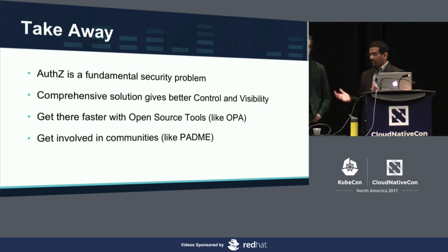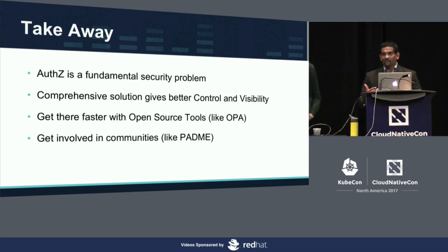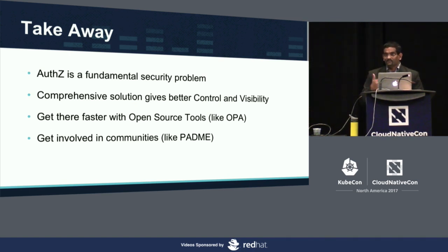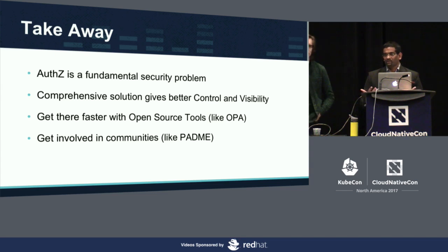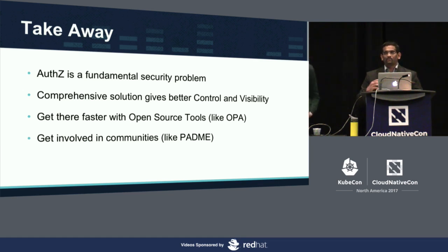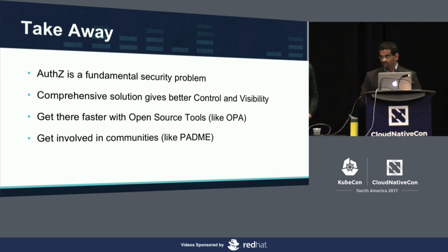I came to know about OPA only earlier this year. I knew my requirements, and as soon as I saw it I thought: this fits my requirement. Even if a language is not Turing complete, it doesn't mean it's not good enough — it's still a language. So look around for open source projects and if it fits your requirement, you can get there faster. And the last point: you don't have to build this alone. There's a young community called Padme — they had a session earlier today. Get involved in the community so you can solve this with other people, and you may even learn something more about this problem and find use cases you hadn't thought about.